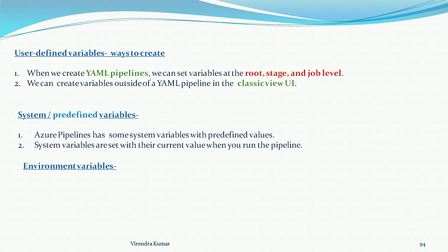When you run the pipeline on macOS, the operating system variable will be set as macOS. So when you run the pipeline, that is when the system variables get their values assigned. This is the second type of variable.